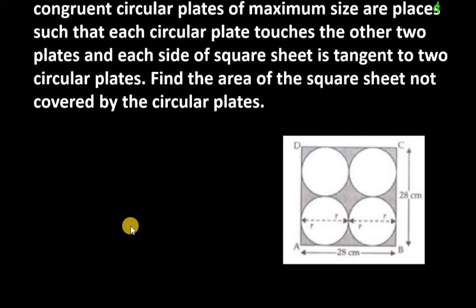You can clearly see in this figure, we have four circles placed inside the square, and the area of the square cardboard sheet is 784 cm².